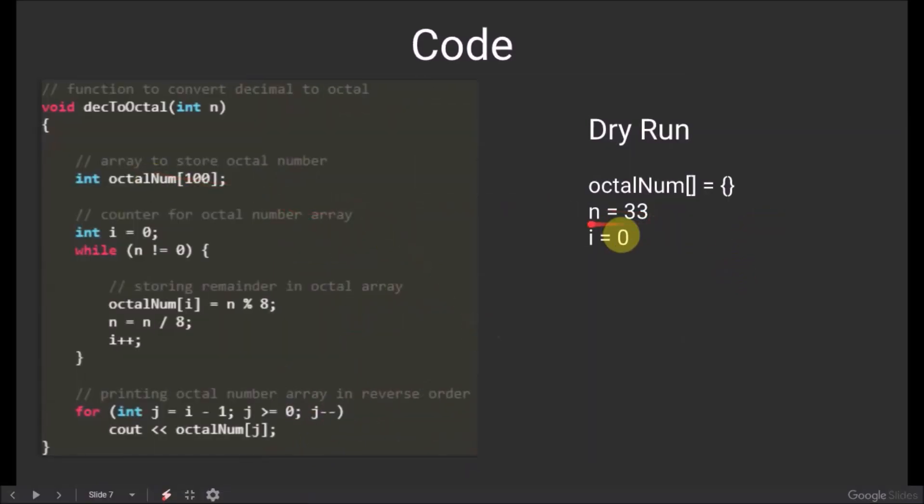Let the decimal number be 33. Initially, the octalNum array will be empty and the value of i will be initialized with 0. As the value of n is not equal to 0, we enter the while loop.